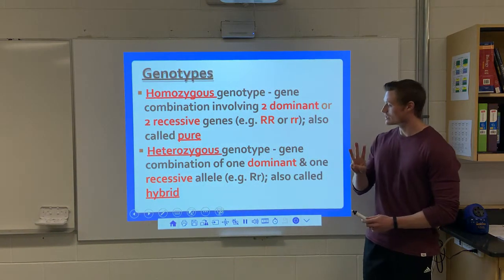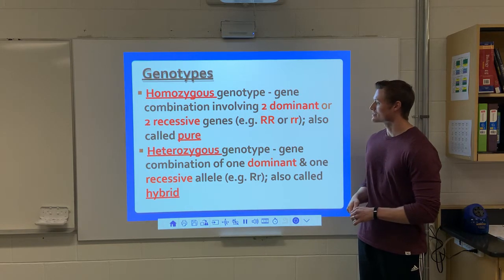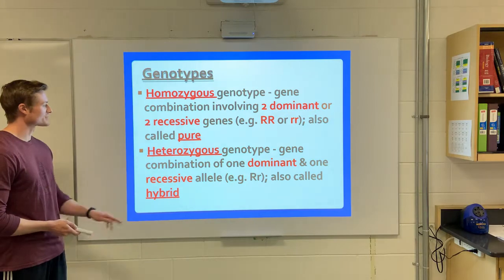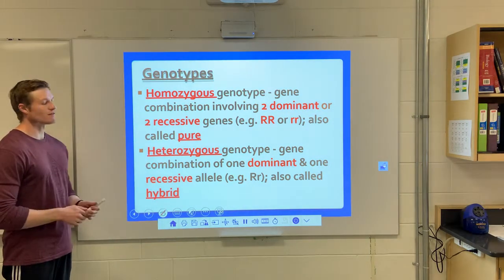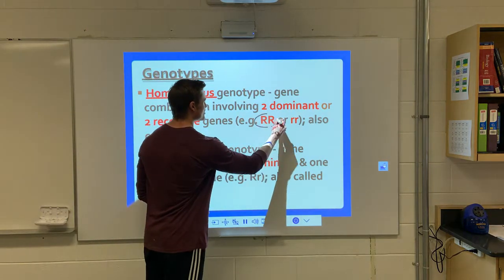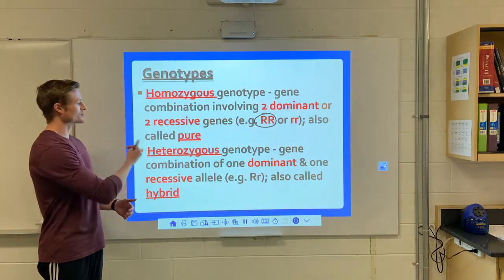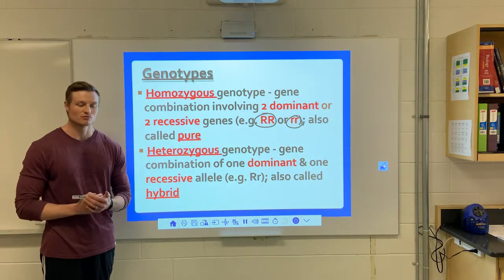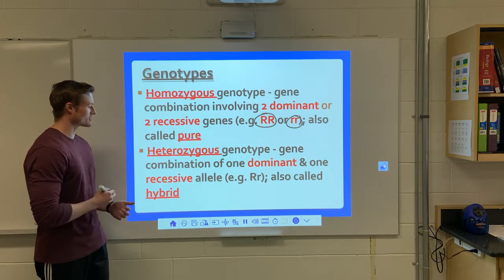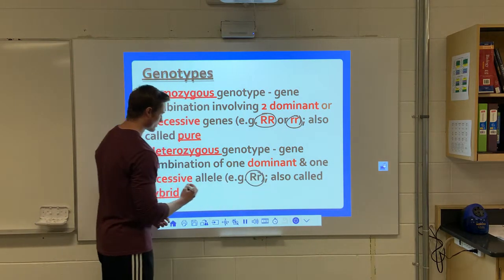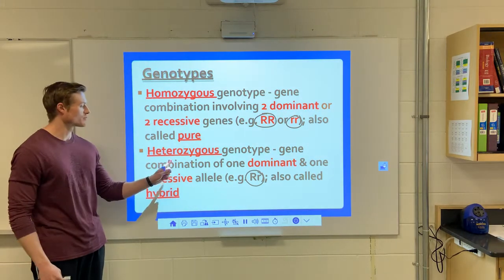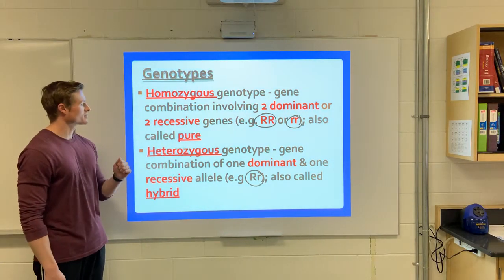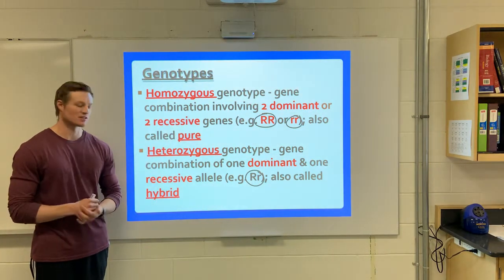There are three genotypes: homozygous dominant, homozygous recessive, and heterozygous. Homozygous means the same — homozygous dominant means you have a double dominant genotype, like big R big R. Homozygous recessive is two recessive alleles, two little r's, and we often refer to this as a true breeding or pure breeding individual. Heterozygous is one dominant and one recessive — big R, little r — and we refer to them as hybrids. If you're big R little r, you show the dominant trait over the recessive trait.